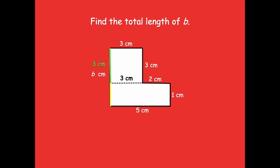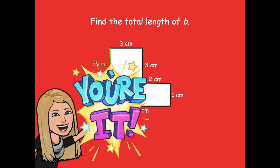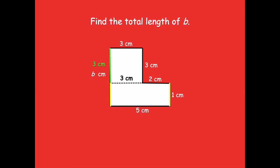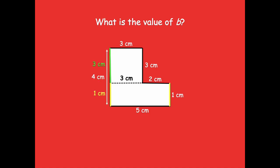Pause and try to find the total length of B. The opposite sides are equal: the yellow side on the right is one centimeter, so the side on the left is also one centimeter. The green side is three centimeters and the yellow side is one, so three plus one equals four centimeters. That arrow represents the entire length of that side. So the total length of the left side is four centimeters.